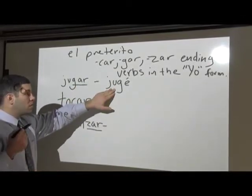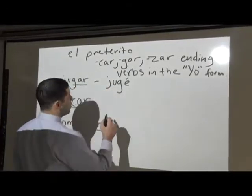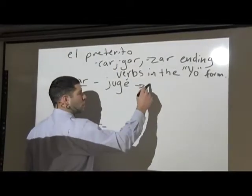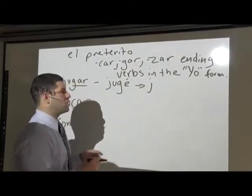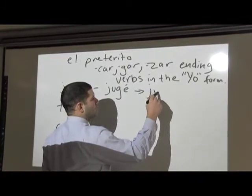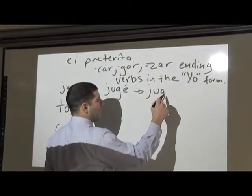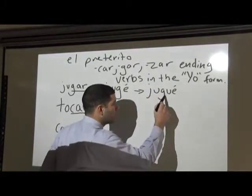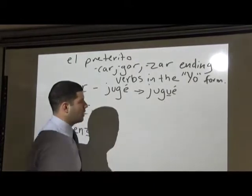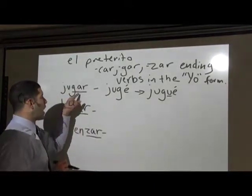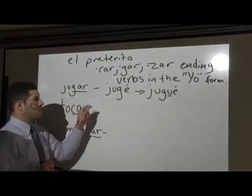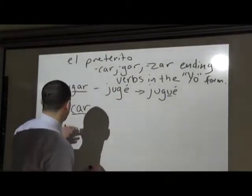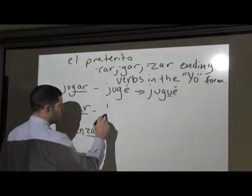This is only the yo form. What you need to do is add a U in there so you get a hard G sound. So you actually want to add the U to get jugué. Any GAR ending verb, you need to add a U for the yo form only.